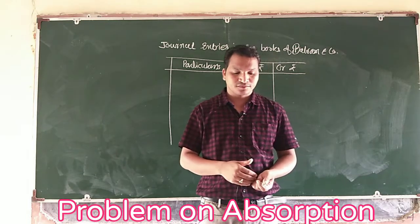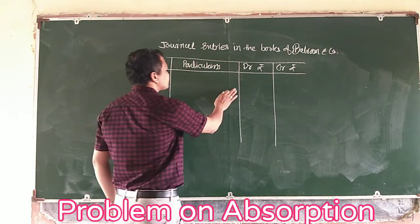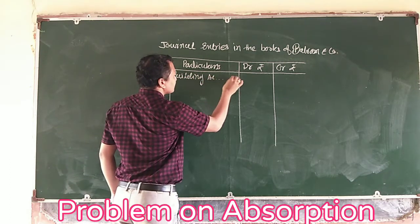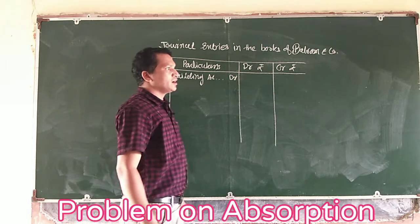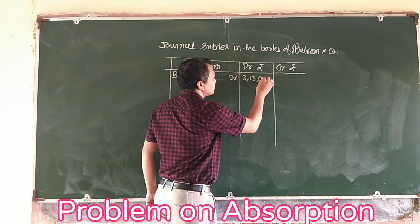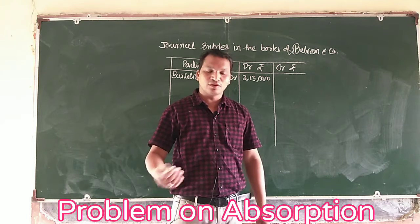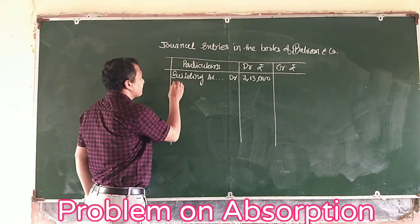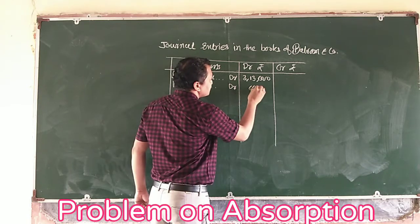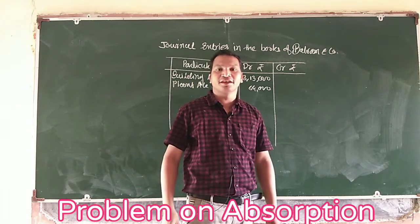Let's debit the assets. Building account debit — the value of the building is ₹3,13,000. When you buy the plant at book value, it is ₹64,000. Plant account debit amount is ₹64,000. The next asset is furniture account, and furniture is ₹17,000.